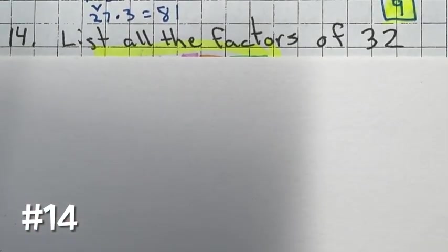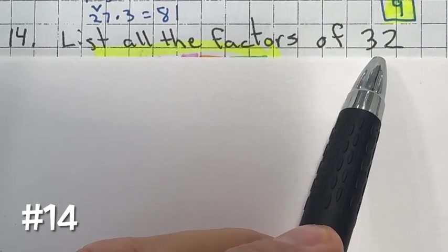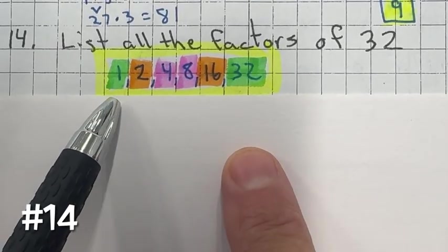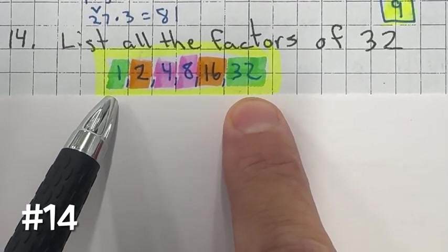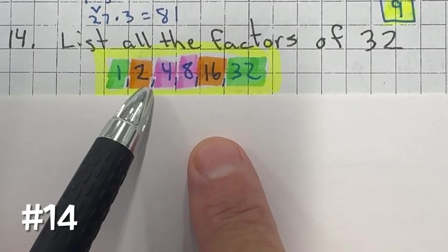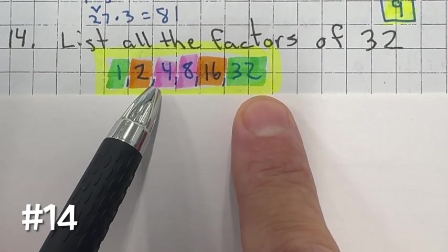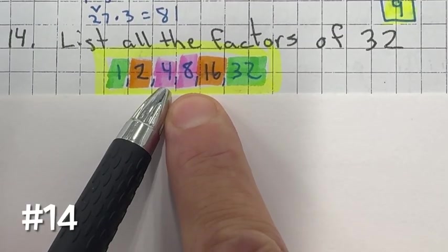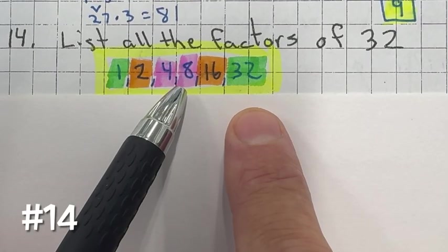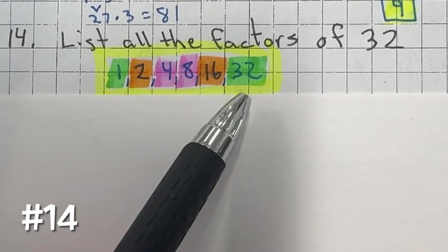Number 14: list all the factors of 32. Factors are two numbers that when multiplied equal 32. Starting at one: one times 32 is 32, two times 16 is 32. Three is not a factor. Four times eight is 32. Five, six, and seven are also not factors of 32 because there's no whole number you can multiply them by to get 32.